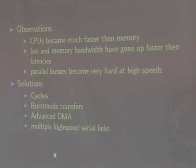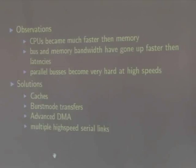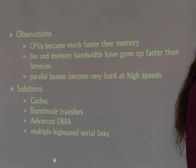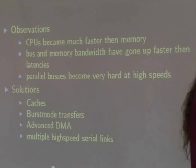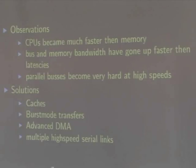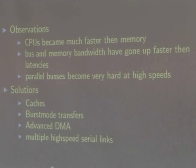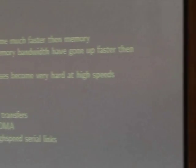Parallel buses have problems at higher speeds because all lines must be almost equally long — you can only sample them when all are stable, making routing high-speed parallel buses on PCBs very difficult. High-speed serial links solve this. The reason we didn't adopt them earlier is that the serializer/deserializer logic required extra chip space and only recently became economically realistic to implement.